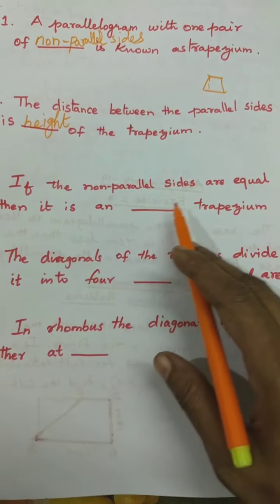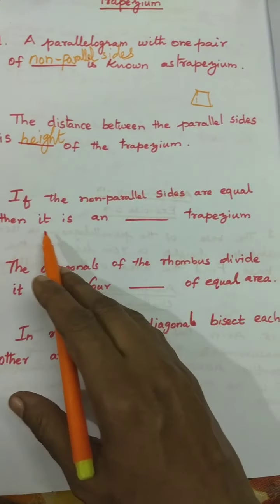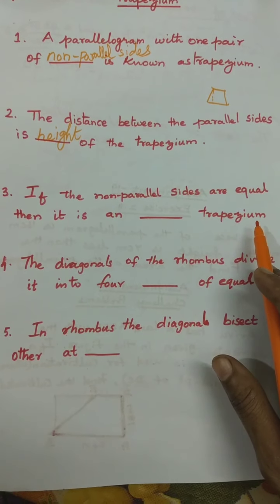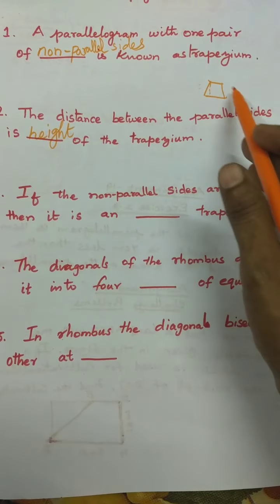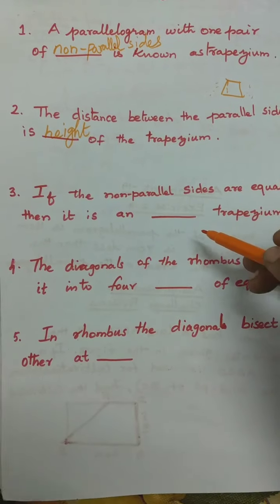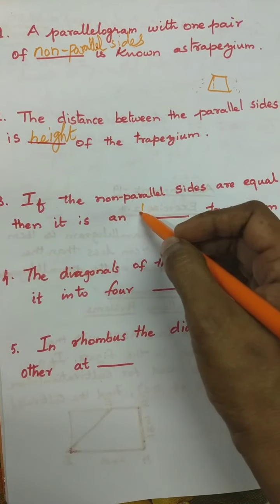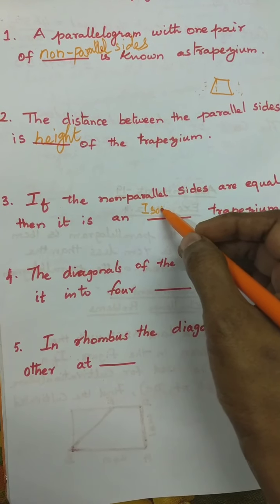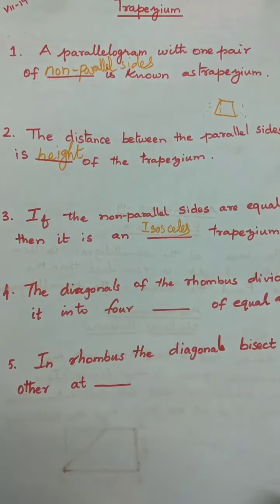If the non-parallel sides are equal, then it is an isosceles trapezium. These two are the non-parallel sides. If these two non-parallel sides are equal, it is called an isosceles trapezium.